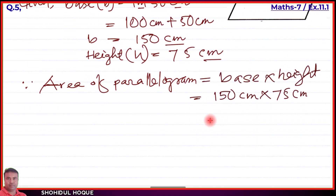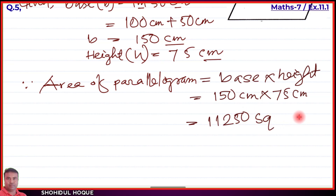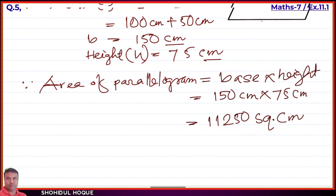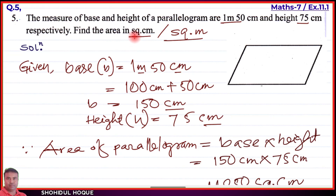Multiplying 150 by 75, we get 11,250 square centimeters. Centimeter into centimeter gives square centimeter. So the area in square centimeter is 11,250 sq cm. This is the answer for the English medium question.